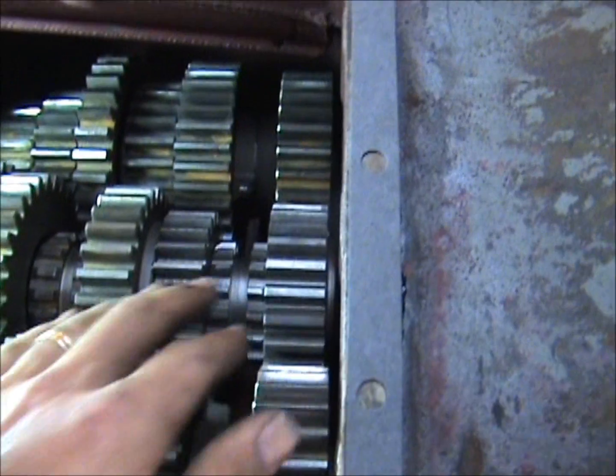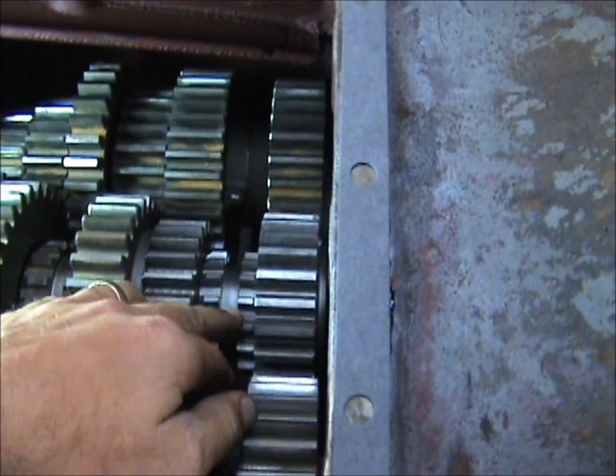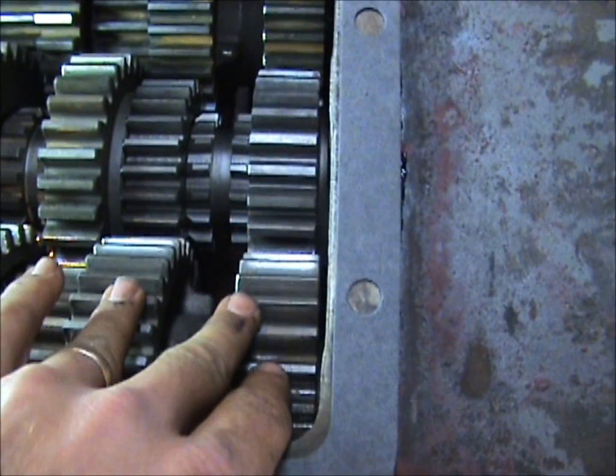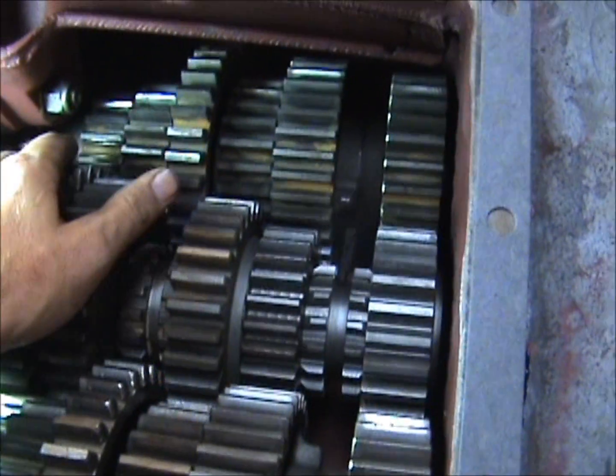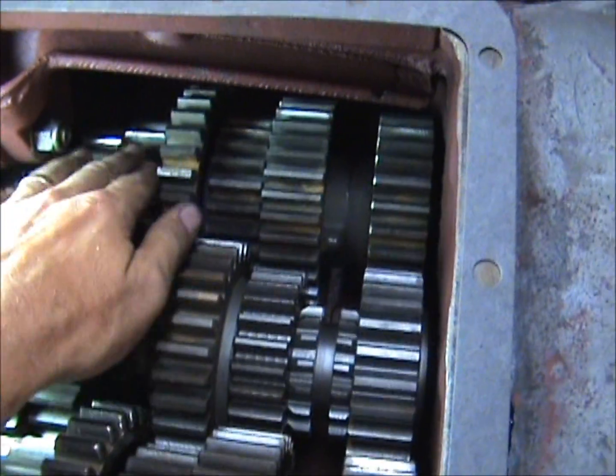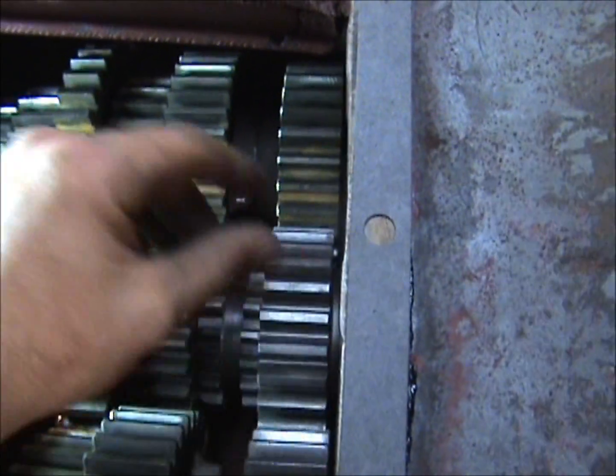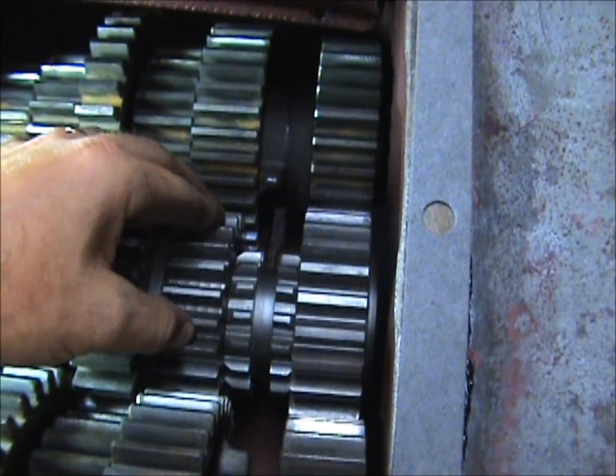The only difference is these two gears right here—that sliding dog—and then changing these gears right here around on the countershaft. The normal countershaft goes smaller, bigger, bigger, bigger, biggest, but what you're doing is changing the ratio here.